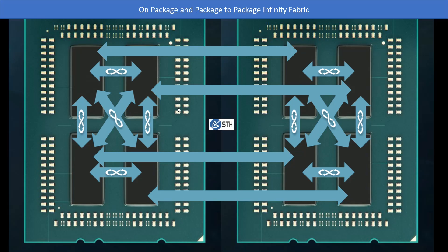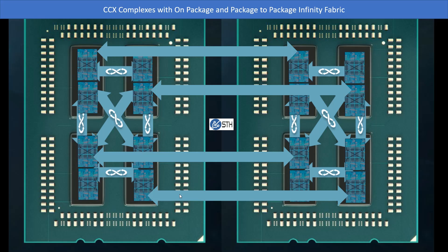AMD also has Infinity Fabric links between matching dies on each package, which allows socket-to-socket communication. Using combinations of these on-package and package-to-package links allows AMD to shuttle data between all of the different dies, and it also means there are multiple routes to move data around. Adding one more layer of complexity, remember that there are a total of eight cores in two different CCX complexes sitting on each of these silicon dies. This shows the complexity AMD was able to manage, and it also shows why AMD produced benchmarks using eight different VMs compiling the Linux kernel — because you can keep each one on a different piece of silicon and don't have to go over the Infinity Fabric, which keeps performance high.